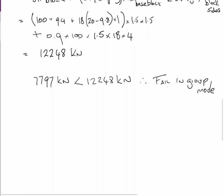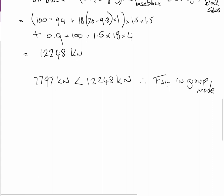So our Q ultimate for design purposes is 7797 kilonewtons. You choose the lower of the two values. And just to finish the question they want the factor of safety. We know that the ultimate design value is 7797 and we know that the working load was 2500 kilonewtons, and that equals 3.1, which equals the factor of safety. And that finishes that question.